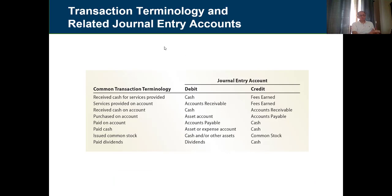Here's a chart showing how most transactions involving cash would look. When we receive cash from a service provided, we debit cash and credit fees earned. When services are provided on account, we debit accounts receivable and credit fees earned, and so on. I don't want you to memorize that, but it can be a good reference. I'd really like you to see how transactions would look like in practice.